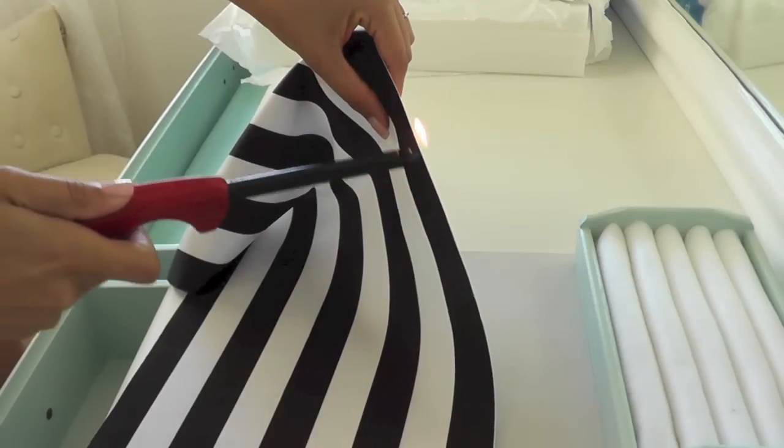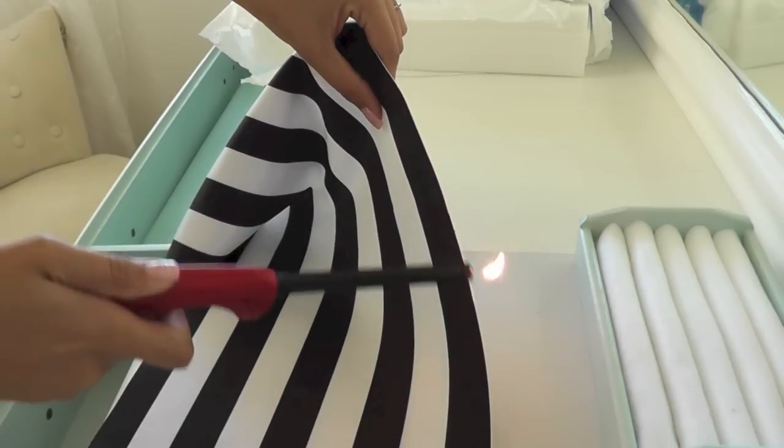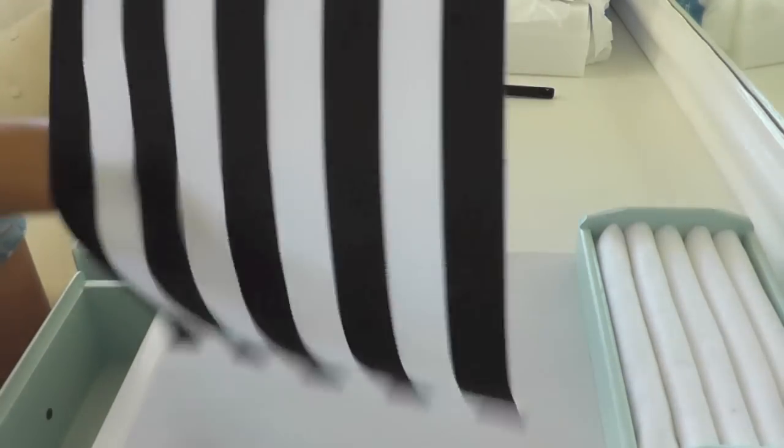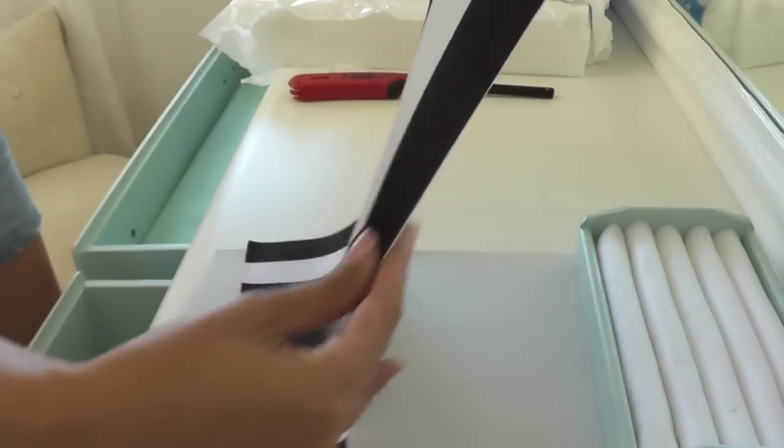Since the fabric I chose is kind of a polyester satin sort of fabric, if you think of ribbon that's kind of what it's like—it's really prone to fraying and getting strings. So I'm using my lighter to seal the edges, and this is just going to guarantee that I have a nice clean edge and no strings later on.